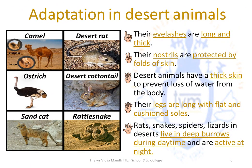Adaptations that take place in desert animals: Their eyelashes are long and thick and their nostrils are protected by folds of skin — both to protect them from blowing sand. Desert animals have thick skin to prevent loss of water from their body. They have long legs with flat and cushioned soles, helping them walk far in the desert without burning their feet. Desert animals like rats, snakes, spiders and lizards live in deep burrows during daytime as it is cooler under the rocks, and are more active at night when the desert is cool.